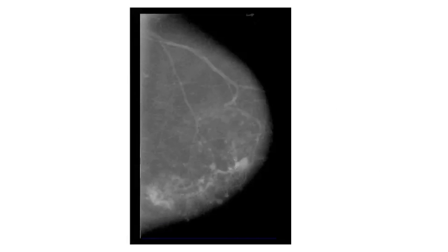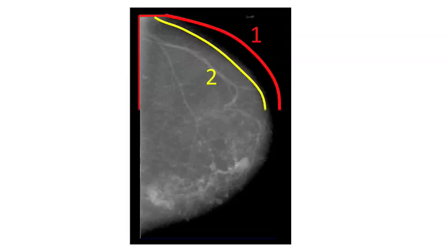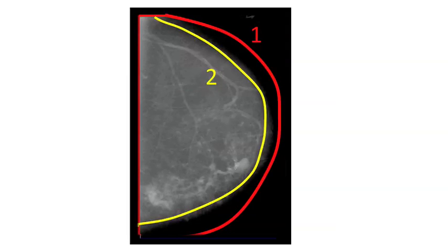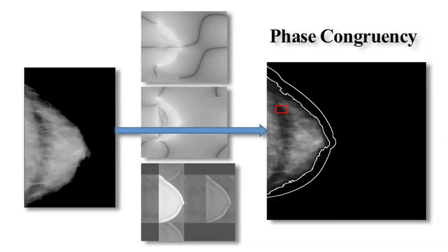There are two important tasks in a calculation of breast density. First, we have to identify the breast in the background on the digital image and then identify the part of the breast that is more or less uniformly compressed. The scientists at Matikina have developed a technique referred to as phase congruency — a mathematical approach used to identify the region of the breast that is uniformly compressed, over which the calculation of breast density is primarily carried out.